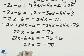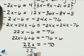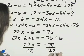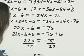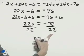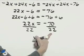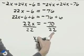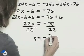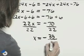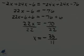On the right is negative 70. Now we can divide both sides by 22 and get x by itself. x equals negative 70 over 22, which can be simplified by dividing both the numerator and denominator by 2. We'll end up with negative 35 over 11.